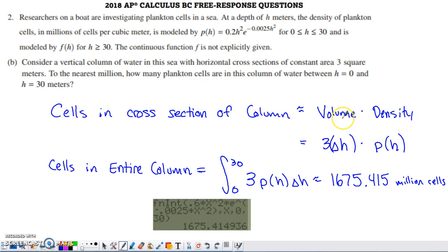So the volume of a cross-section is going to be the area of the face of a cross-section. They tell us that is a constant 3 square meters. So I have the area of the face of a cross-section times the tiny height of that cross-section, some tiny change in the depth of the water.